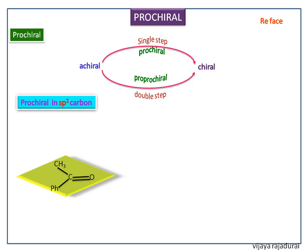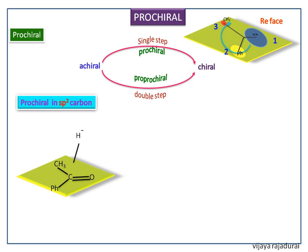A face is labeled re-face if, when looking at the face of the substituents at the trigonal atom arranged in decreasing Cahn-Ingold-Prelog priority order, they appear in a clockwise manner. We can see how the incoming nucleophile attacks the sp2 carbon via the re-face, and the subsequent changes give the chiral product.